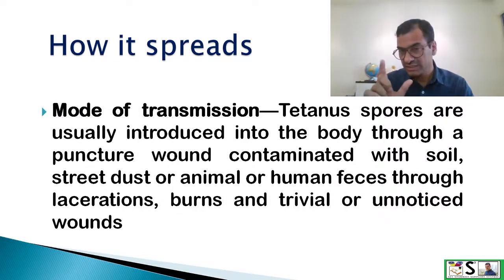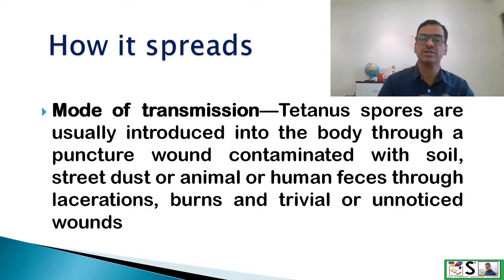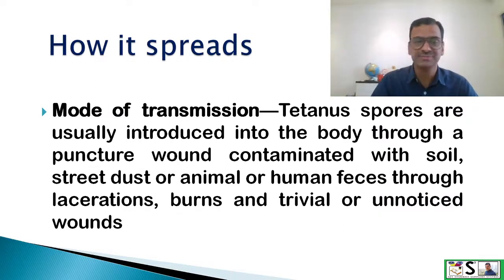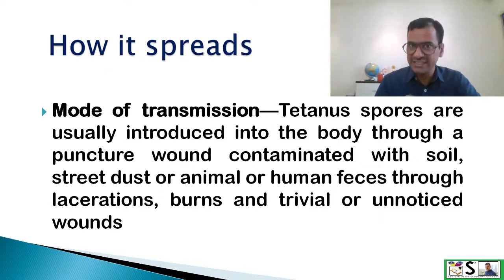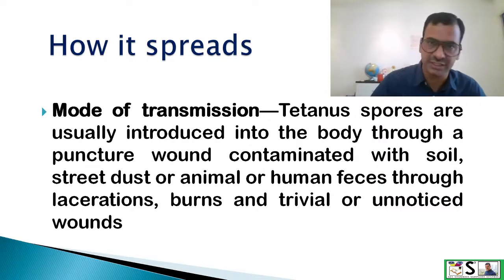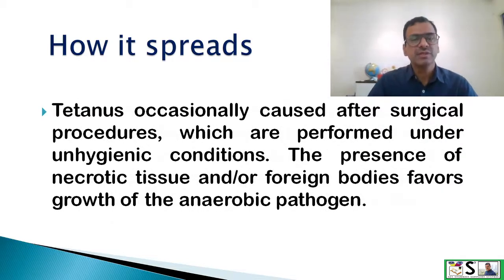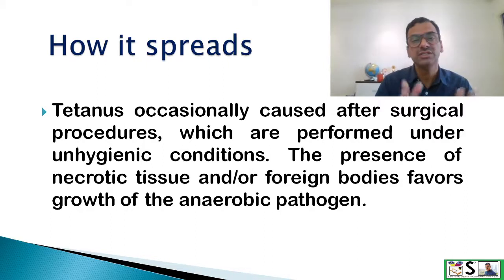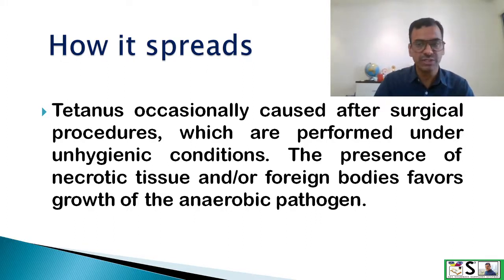Mode of transmission: The tetanus spores are usually introduced into the body through a puncture wound, or a wound contaminated with soil containing the spores, street dust, animal or human feces, through lacerations, burns, or trivial unnoticed wounds. Tetanus occasionally occurs after surgical procedures performed under unhygienic conditions. The presence of necrotic tissue and foreign bodies favors the growth of anaerobic pathogens, so wound care should be proper.